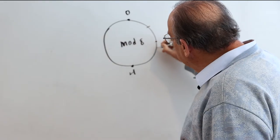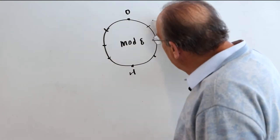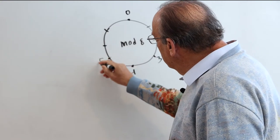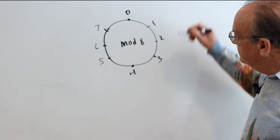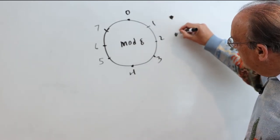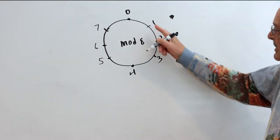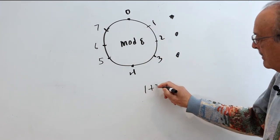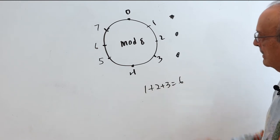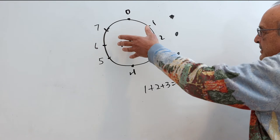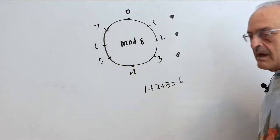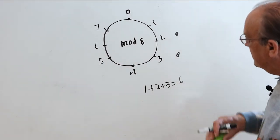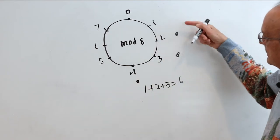We'll start by drawing a Mod 8 clock. So we got 1, 2, 3, 4, 5, 6, 7. Now suppose we take 3 numbers and space them like this. And then we add these 3 numbers. So if we add 1, 2, and 3, we get 6.